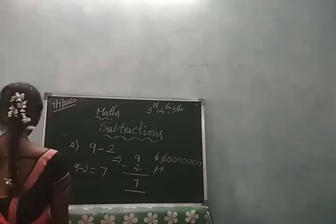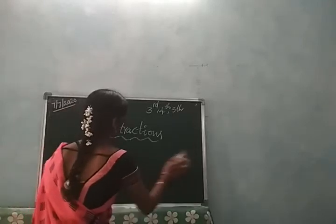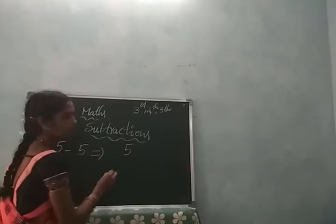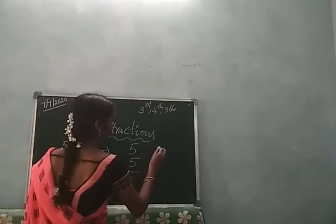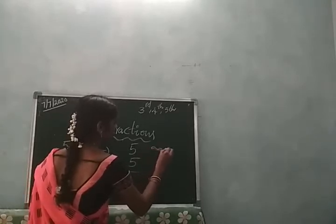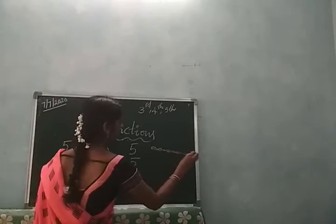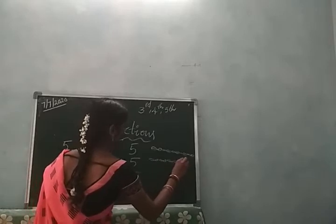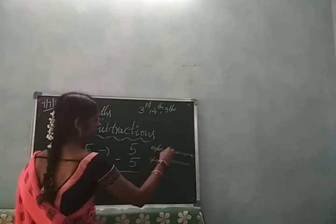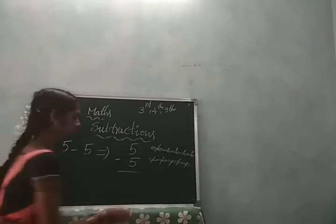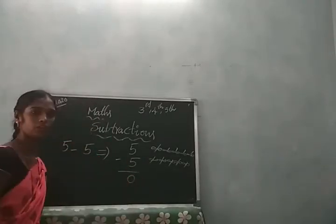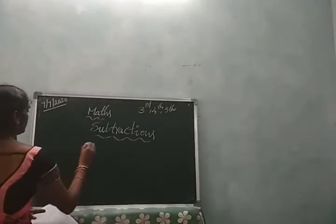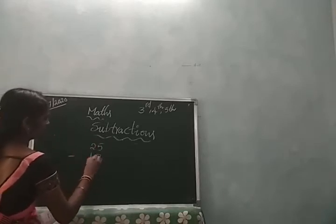After that, 5 minus 5. I will take some chocolates to show this. 1, 2, 3, 4, 5 chocolates. Now I take away all 5. So 5 minus 5 is equal to 0.